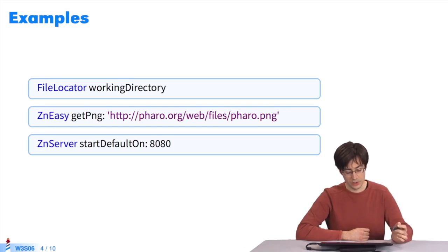In the third example, I send the message start default on to znserver, which is a class again, with a port number. This will start the HTTP server. So, in the three cases, you send a message to one class.